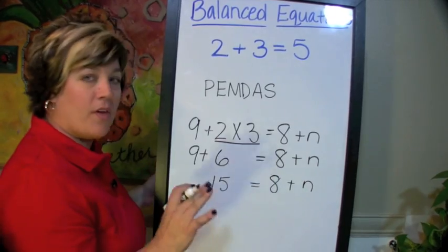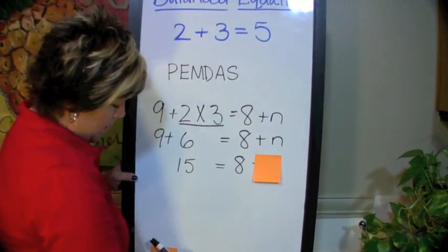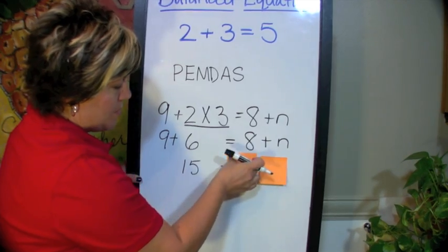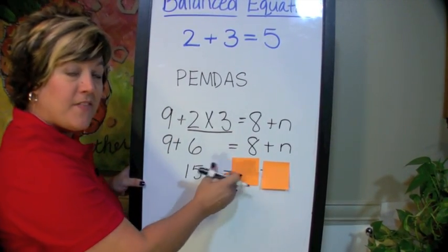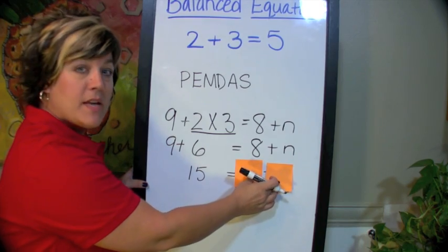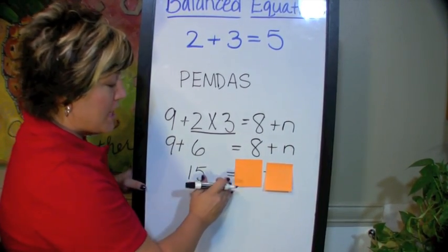At this point, I'm going to use something called the cover-up method. I'm going to go ahead and cover up the variable. I'm also going to cover up this number here. And what I end up is 15 equals, and if this is an equation, then the other side must be 15 as well. So it's supposed to be 15 equals 15.